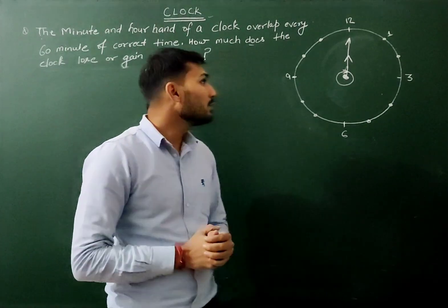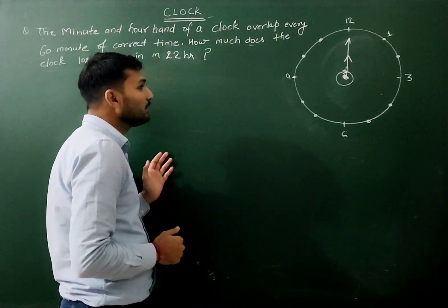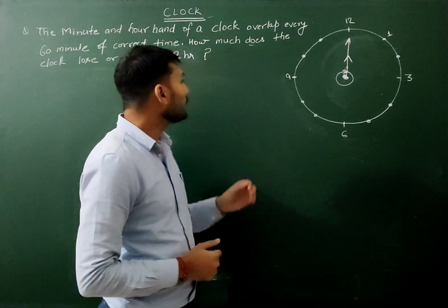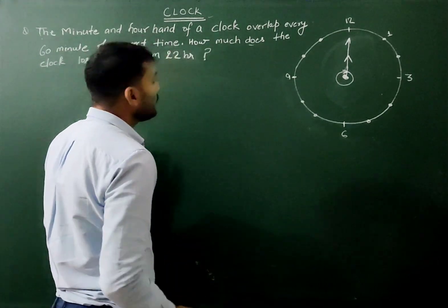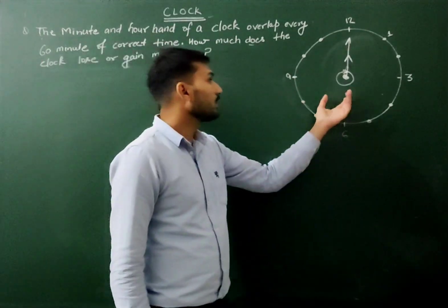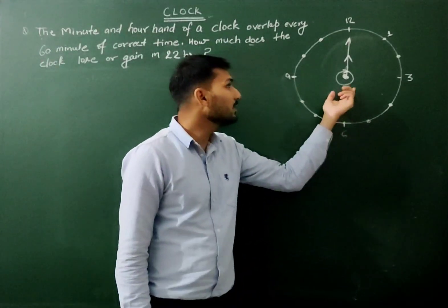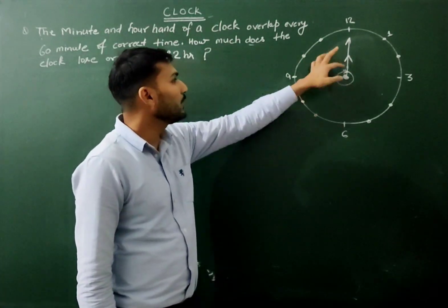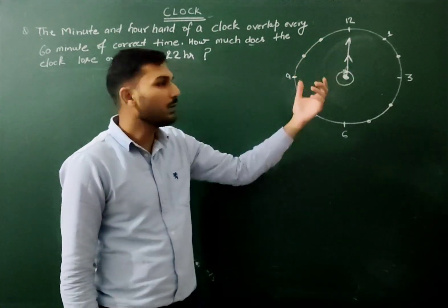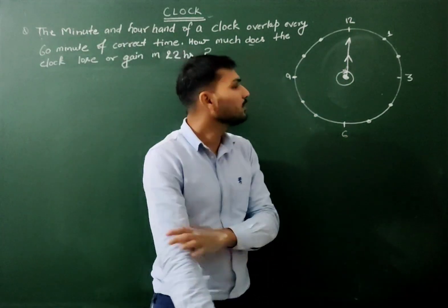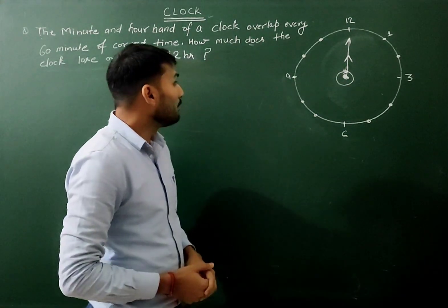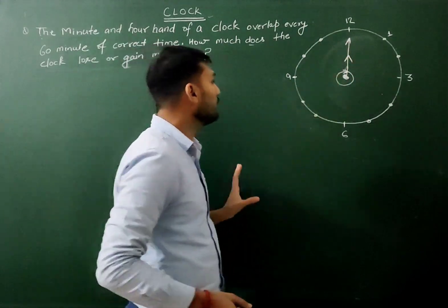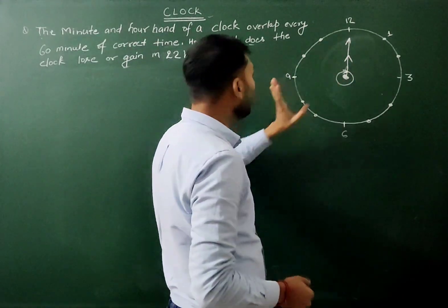So let's start with a very basic concept of this chapter — the name is 'Clock.' We start this chapter with fundamental skills, and before starting you have to know about the needles of the clock. There are three needles in the clock: the hour hand, minute hand, and second hand. But we discuss about only two needles — the hour hand and minute hand — because the use of the second hand is negligible.